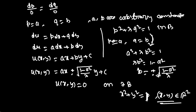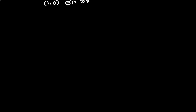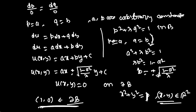If we take the point (1, 0), it belongs to the boundary ∂B since 1² + 0² = 1. So u(1, 0) should be 0 because u(x,y) = 0 on ∂B.